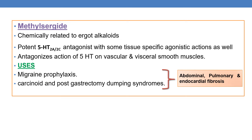The next drug is methysergide. It is chemically related to ergot alkaloids. It is a potent 5-HT2A/2C antagonist with some tissue-specific agonistic actions as well. It antagonizes actions of 5-HT on vascular and visceral smooth muscle.